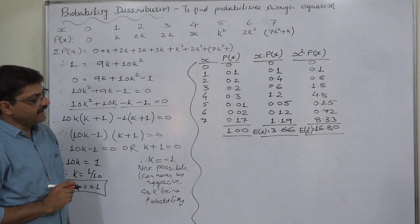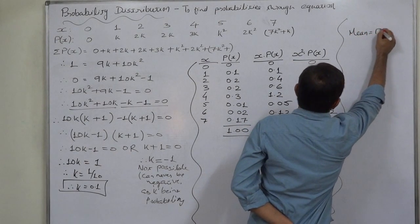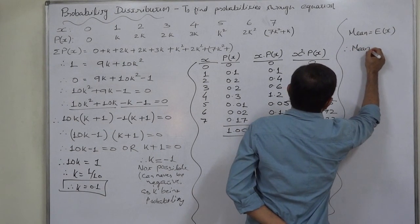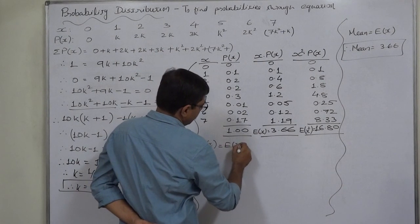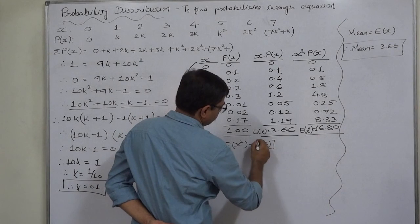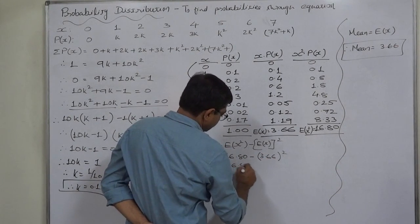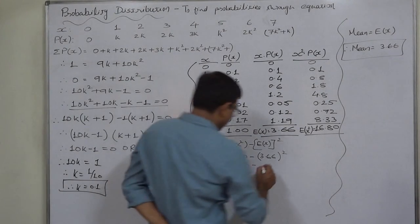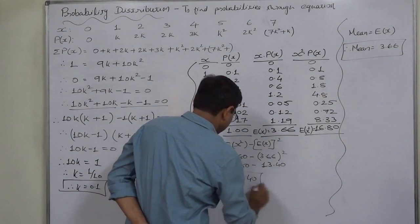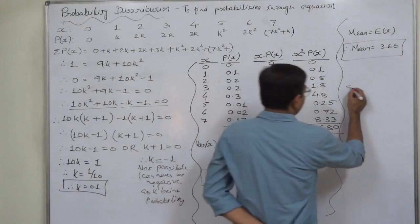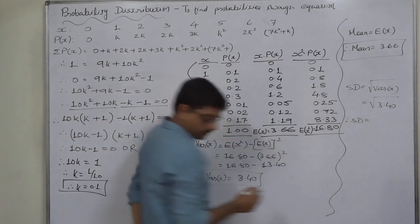Now we have E(X) as well as E(X squared), so we can find mean, variance, and standard deviation. The mean of this probability distribution is E(X), therefore mean equals 3.66. Variance of X equals E(X squared) minus [E(X)] squared, which is 16.8 minus (3.66) squared, giving 16.8 minus 13.4, so variance equals 3.4. Standard deviation is the square root of variance, which is the square root of 3.4, giving approximately 1.84.